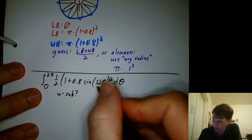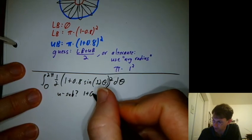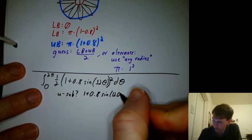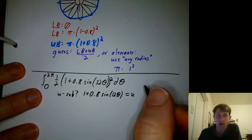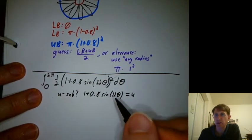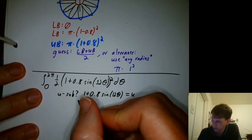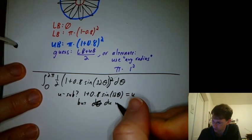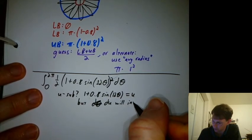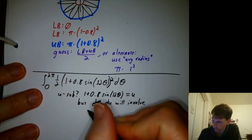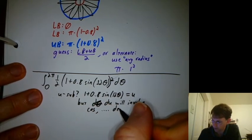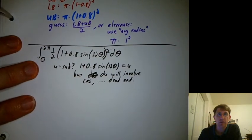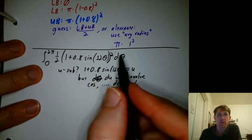How about u substitution? You might say, well, there's something inside the squaring, so can we say u equals 1 plus 0.8 sine 12 theta? But then du is going to have a cosine and we don't have a cosine here. Du will involve cosine, so that ends up being a dead end.